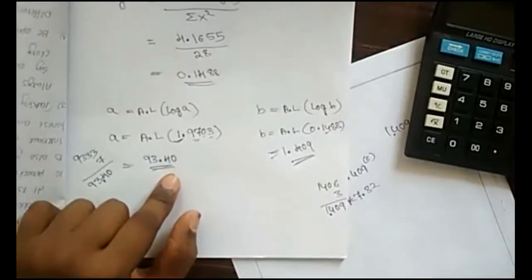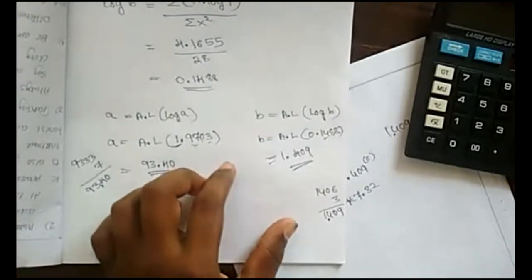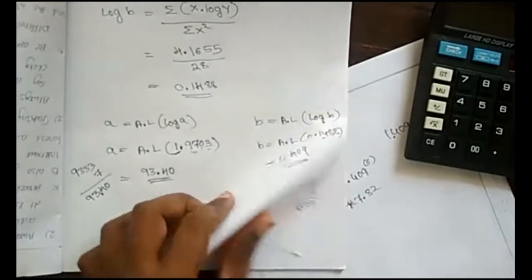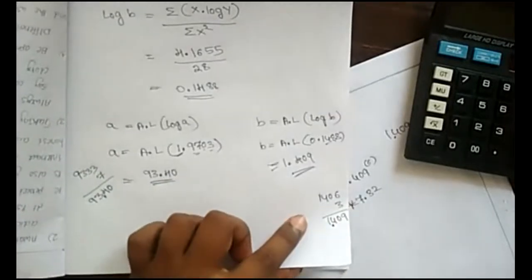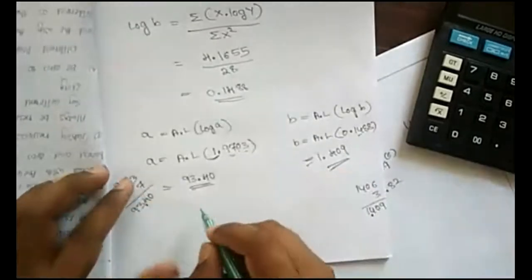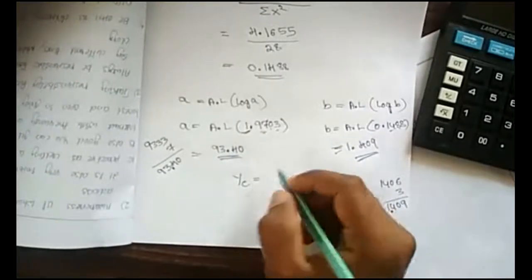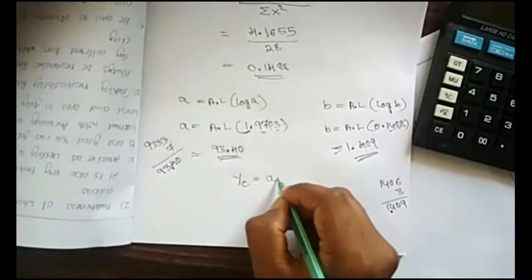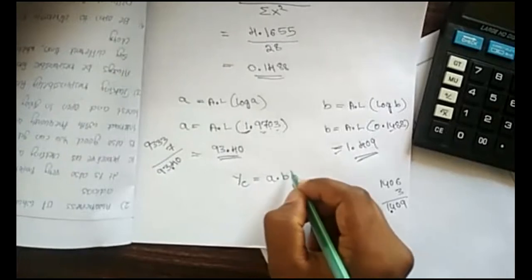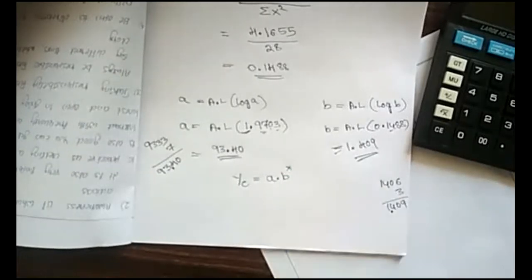Finding out log, anti-log is very important here. Next, with this detail you can estimate the trend values. The equation is, y is equal to a into b to the power of x. So, this is the equation.